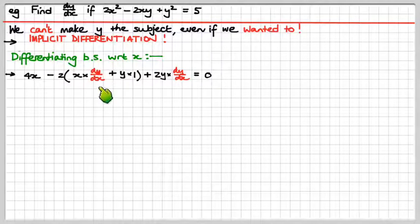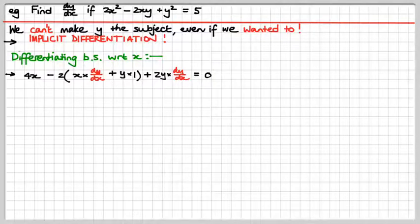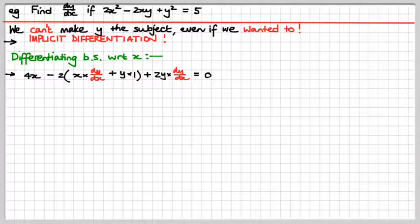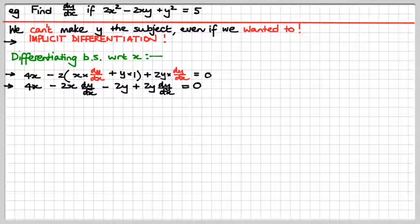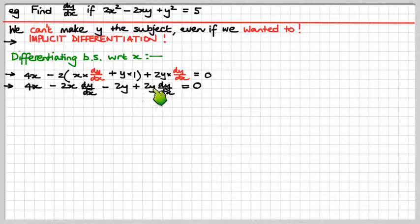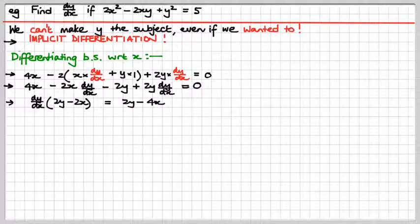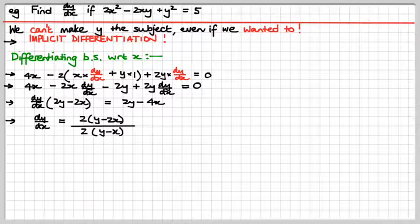I've highlighted the dy/dx terms in red — that's what we're solving for. After expanding the bracket from the product rule, we collect all the dy/dx terms on one side, factor out dy/dx, and divide both sides by the bracket. After cancelling, that gives us dy/dx in a clean form.